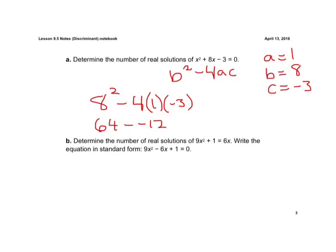So if we have minus a negative 12, same as plus a positive. And we're going to get 76. Okay, we see that's a positive number.